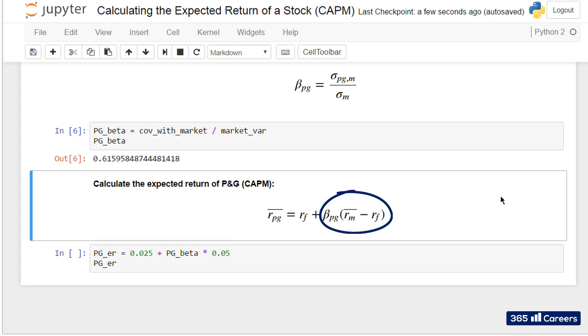And it makes sense when you think of it. There is a certain premium that investors require for undertaking a risky investment. The way we calculate this premium is by measuring how risky a stock is regarding the market, measured by beta, and multiplying this by the average premium for investing in the market.